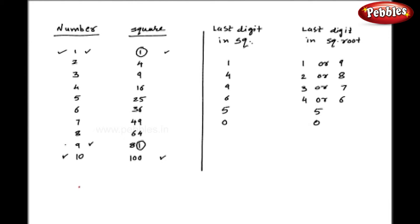Pay attention carefully. Similarly, you will never have 2, 3, 7 or 8 as last digits of perfect squares.